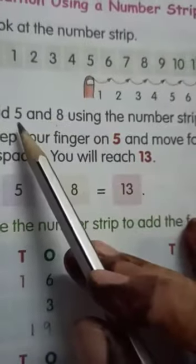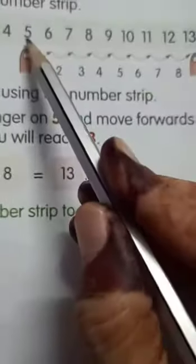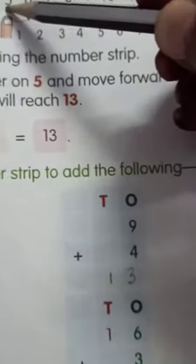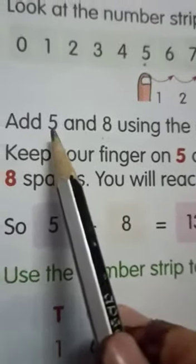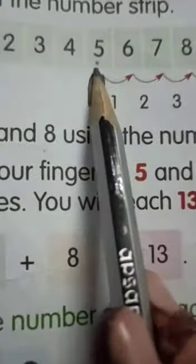So, we have to add here 5 and 8. First, put your finger on 5. Why? Because, we have to add 5 and 8.